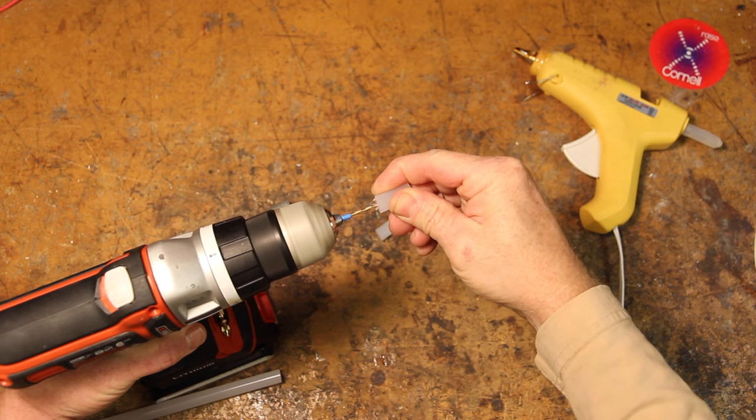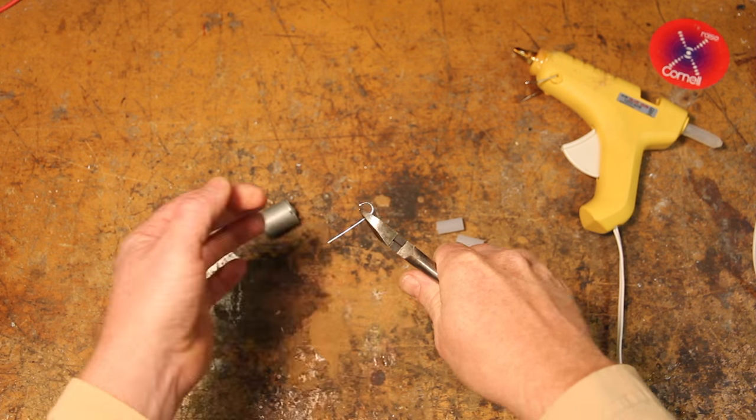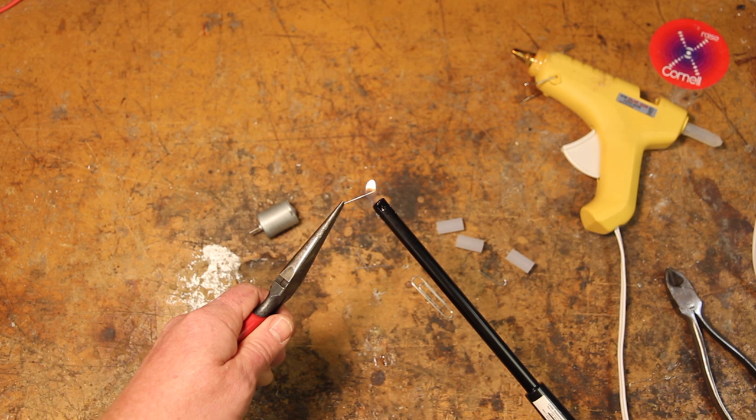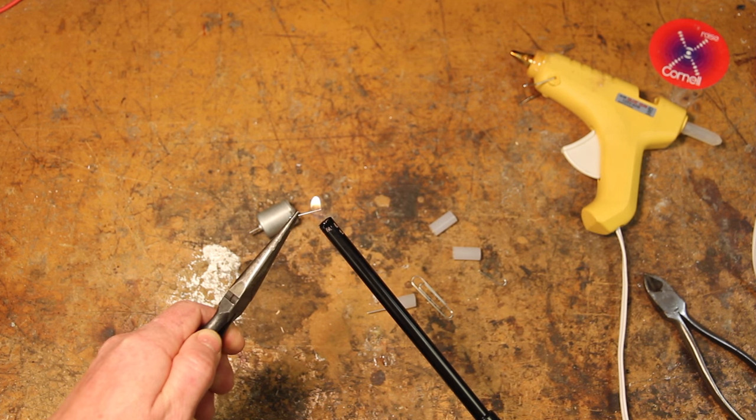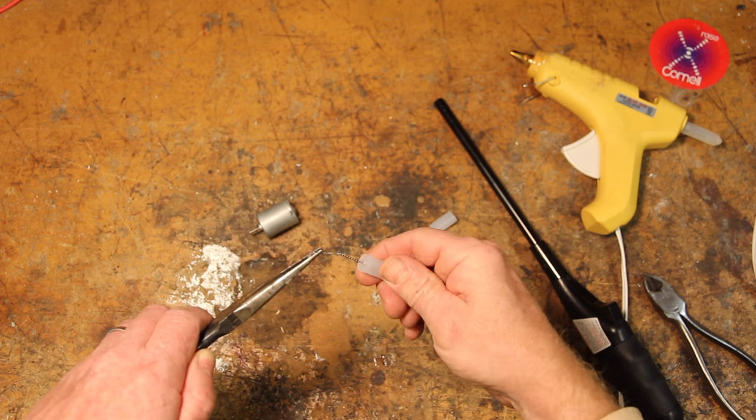Next, cut a few one-inch pieces of paperclip. Heat up the end of the paperclip to make it hot enough so that it can melt into the glue stick. Do this again so that you end up with two pieces of paperclip lying along the diameter of the glue stick.